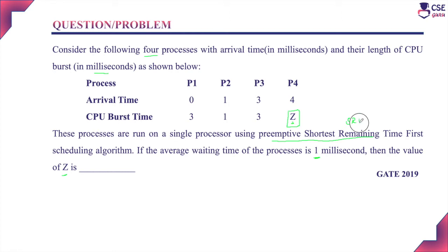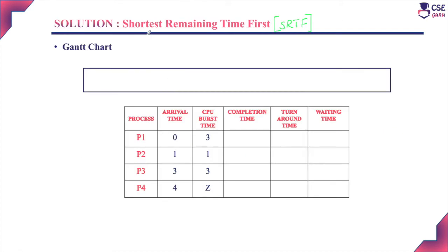That is the SRTF algorithm. The shortest remaining time first algorithm is nothing but the preemptive SJF algorithm. SJF is the shortest job first algorithm — whichever process has the least CPU burst time will be assigned to the CPU first. In SRTF, during execution, if any new process enters the ready queue with a lesser CPU burst time, the ongoing process will be preempted and the process with the least CPU burst time will be assigned to the CPU. This concept is called preemption, and SJF with preemption is called the SRTF algorithm.